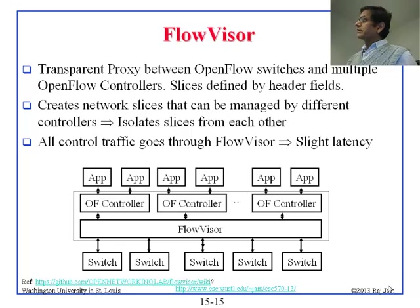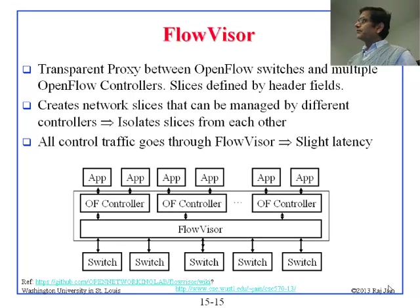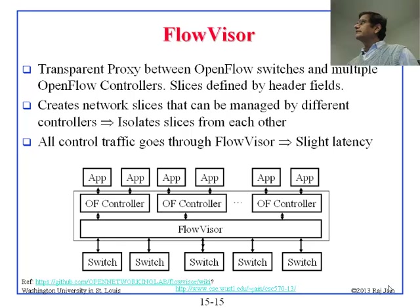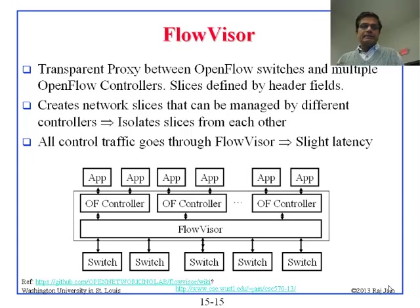Each controller controls whatever pieces it controls and has complete control over that. So half of a switch, for example, could belong to one controller and the other half to another. What FlowVisor does is make the switch think it is talking directly to the controller. The switch sends to that, and then FlowVisor intercepts it, looks at what it is and where it is going, and gives it to the right controller. In that sense, it provides slicing — it slices the network into pieces controlled by each controller.